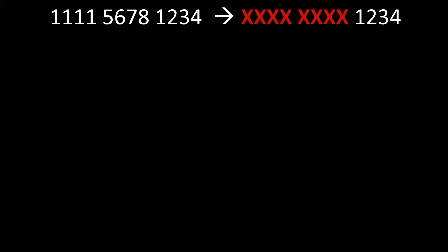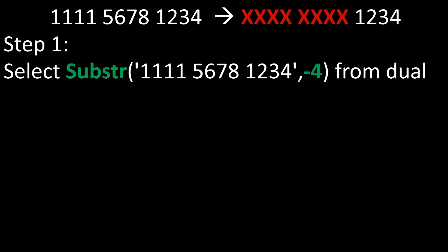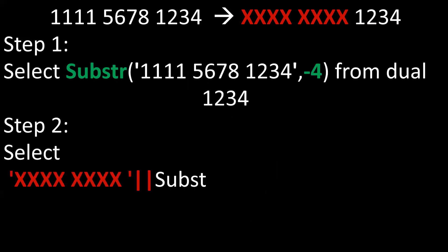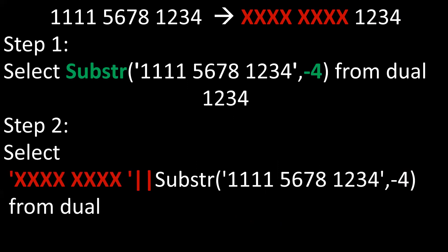In a similar way, if you want to display the last four digits of a particular number, by using substring we extract the last four digits. Then by using the pipe symbol, we concatenate all 'X's with those four digit characters. This is the required output. Based on our requirement, we display either the first four or last four digits.